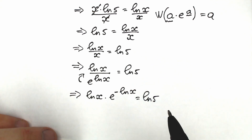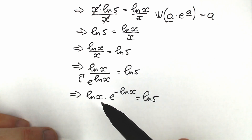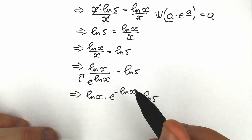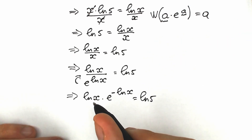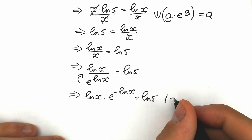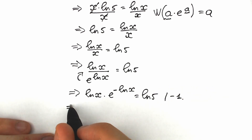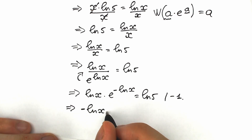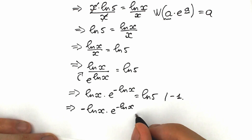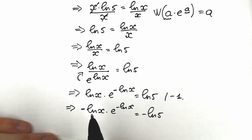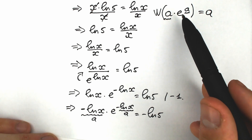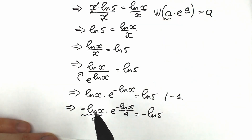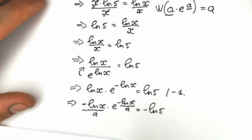If we look closely, we have e and what looks like the same expression. But for the Lambert W function we need the exact same expression in both positions — as the multiplier and as the power of e. Right now they are natural log x and minus natural log x, so they differ by sign. Let's multiply both sides by minus 1, giving us: minus natural log x times e to the power of minus natural log x, equal to minus natural log 5. Now minus natural log x appears in both positions, matching the a·e^a form perfectly, so we can apply the Lambert W function.